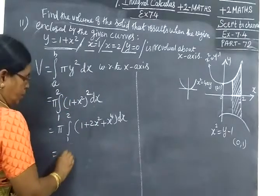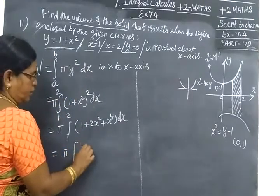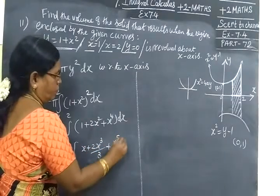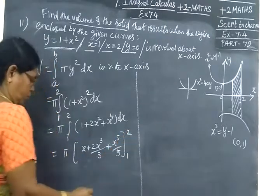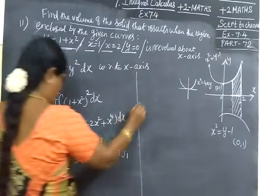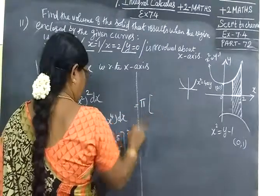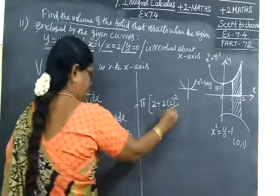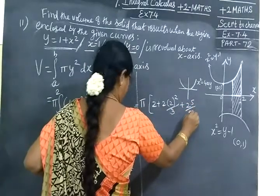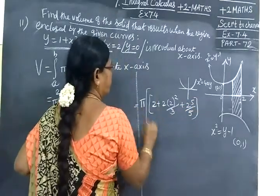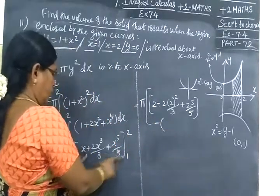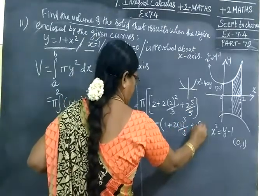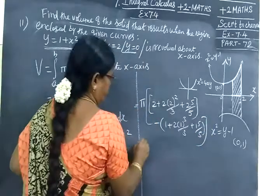Now apply the integral. So π[x + 2x³/3 + x⁵/5] from limit 1 to 2. Now upper limit minus lower limit: π[2 + 2(2³)/3 + 2⁵/5 - (1 + 2(1³)/3 + 1⁵/5)].